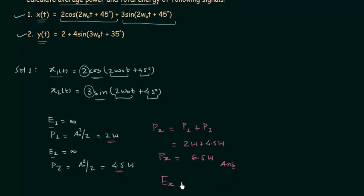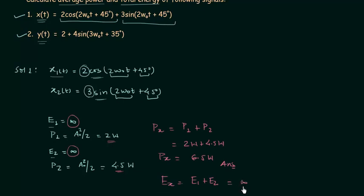The total energy of signal x(t) is ex = e1 + e2. Since e1 is infinity and e2 is also infinity, therefore ex is infinity.